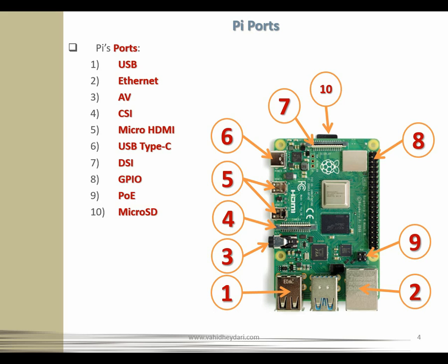Next, I'm going to introduce the different port types on the Pi's board. We start with USB — we can see four USB ports there to connect USB-compatible peripherals. Raspberry Pi boards have two types: two USB 2 ports with black inserts, and two USB 3 ports with blue inserts. The blue ones are faster.